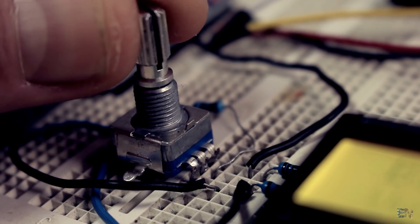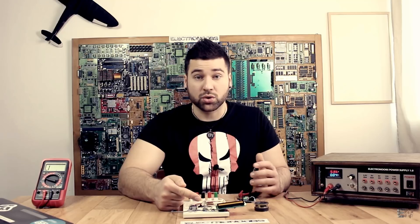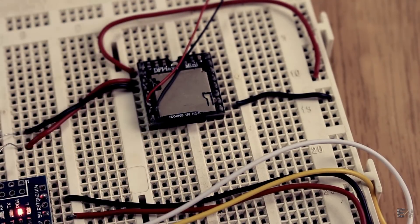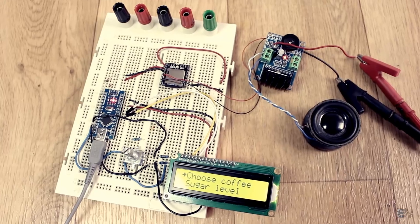So today we will look at a very simple but interesting project. We will use this small rotary encoder to scroll through the menu, this LCD to print our text with I2C communication, this DF player module to play our mp3 sounds and an audio amplifier with a speaker. That's all we need for this project.